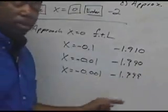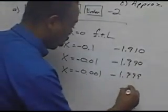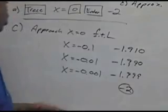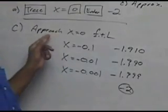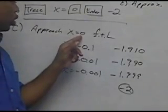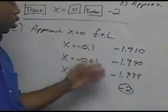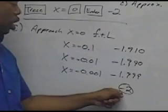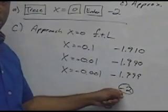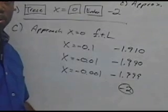This rounds eventually to -2. So we can conclude that as x approaches 0 from the left, our value is approaching -2. We'll use -2 as the solution.